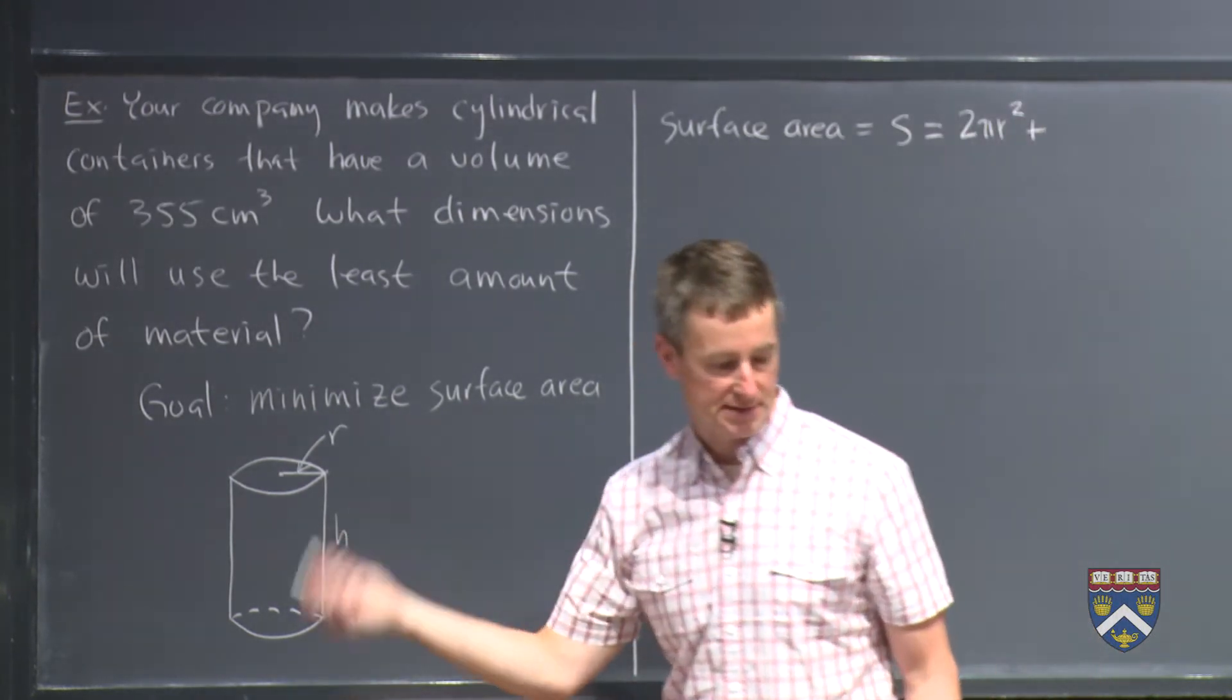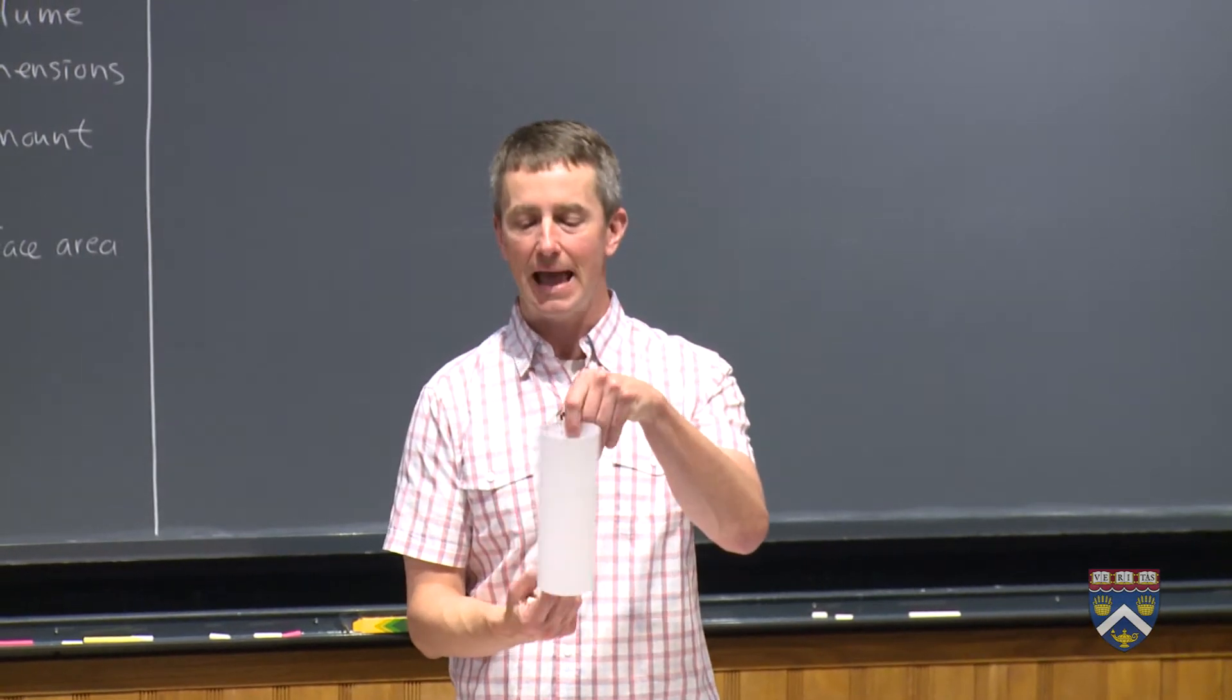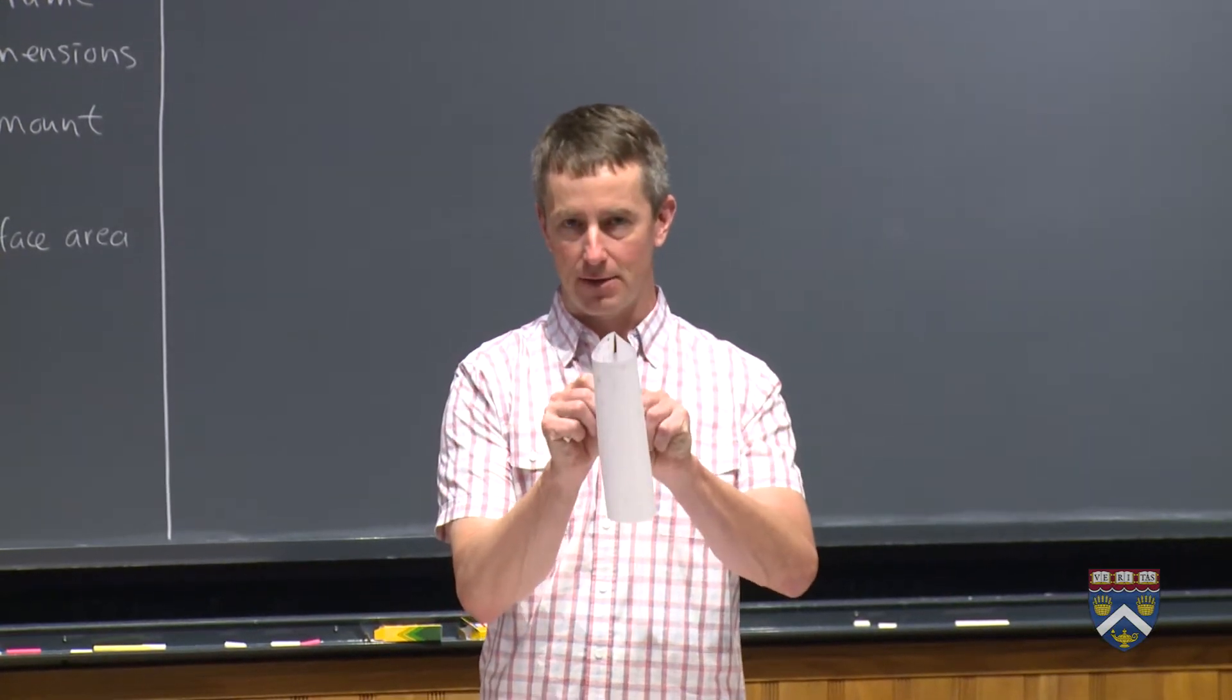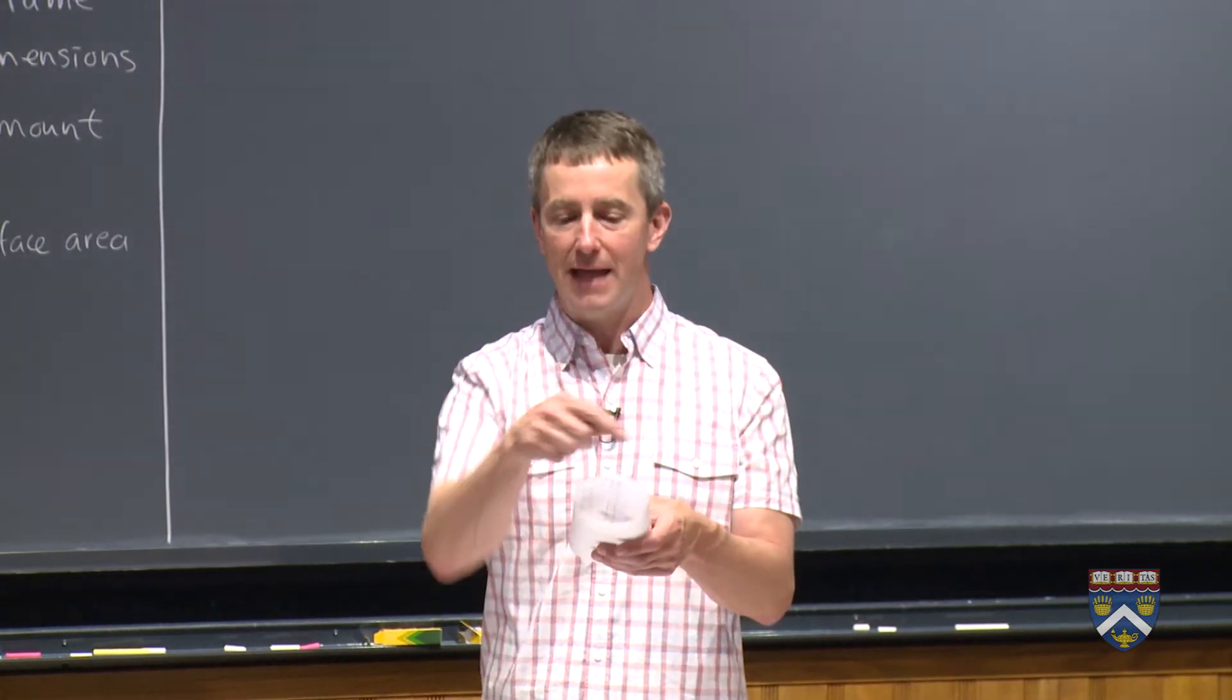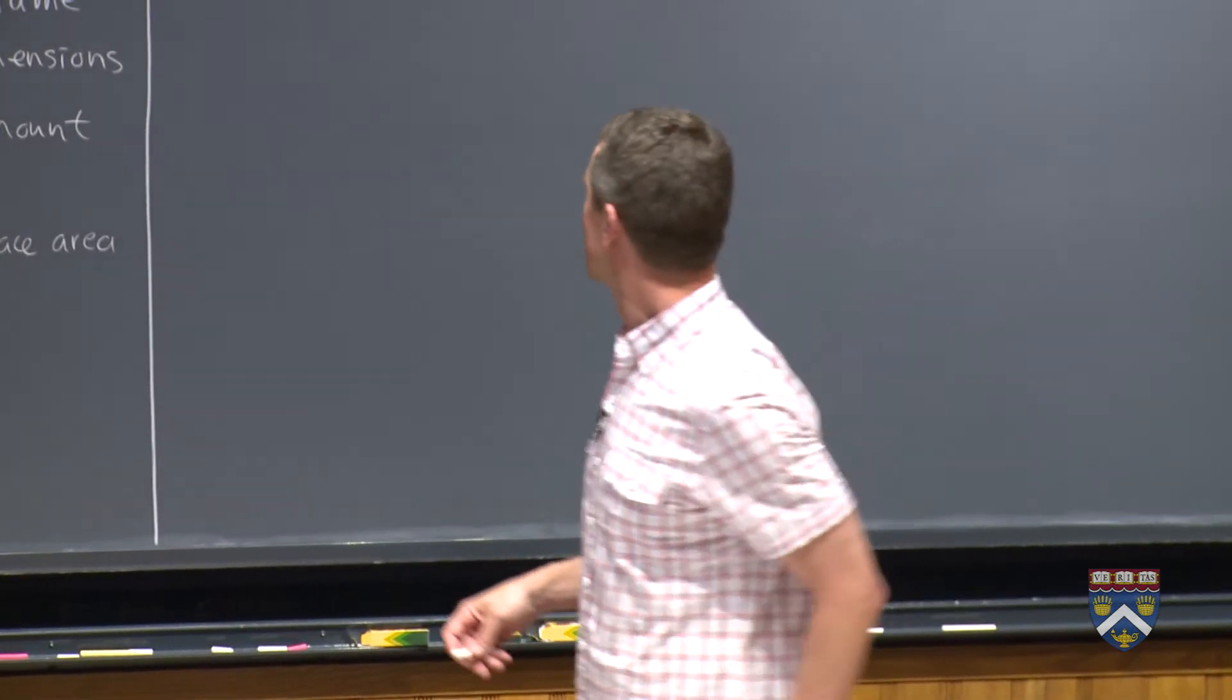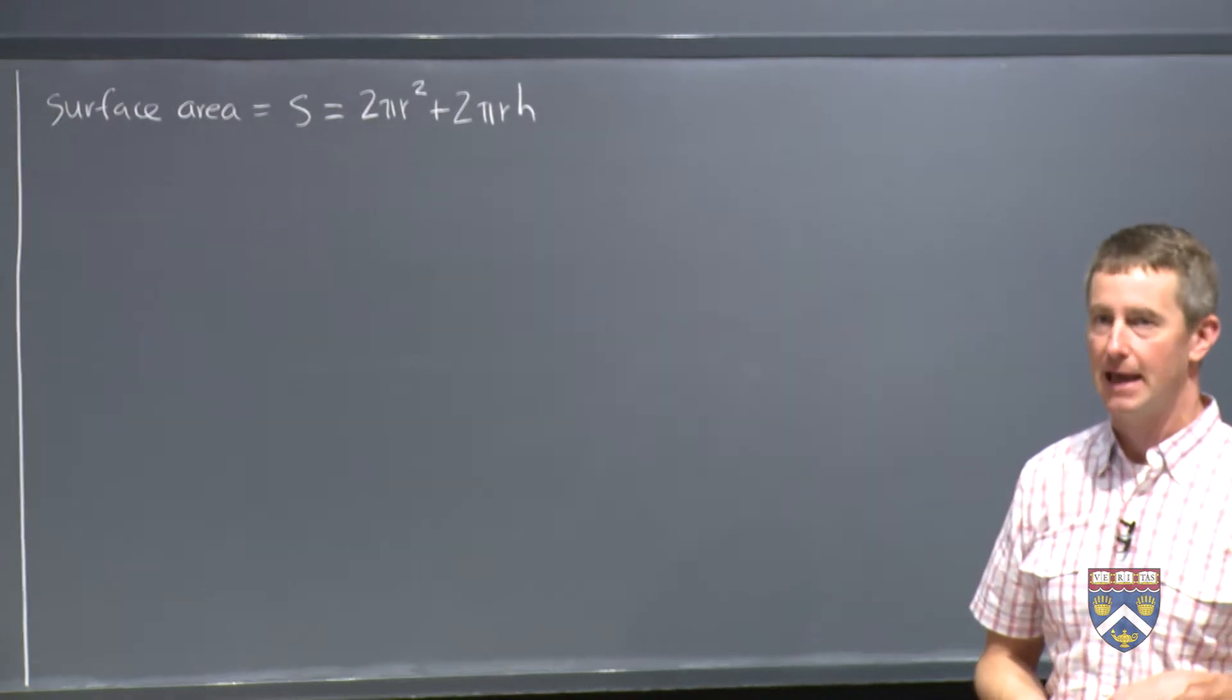Then there's the so-called lateral surface area of the cylinder. That's the part that goes around. So you imagine that if I got a cylinder like this and I cut it, what do I get? A rectangle. What is the area of that rectangle? Well, the height of the rectangle is the same as the height of the original cylinder. And the length of the rectangle is the circumference of the cylinder. So that's h times 2 pi r. So 2 pi r h. So this is the function we would like to optimize, the function whose derivative we would like to take.